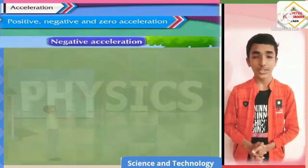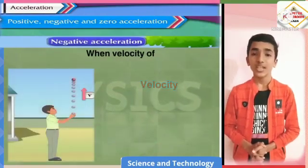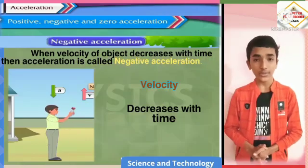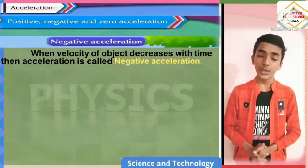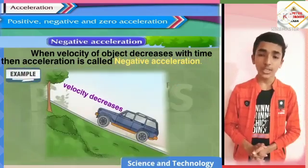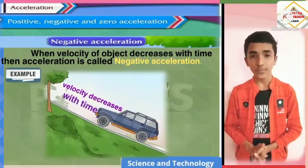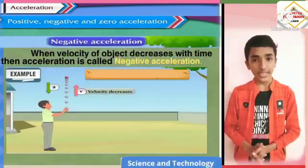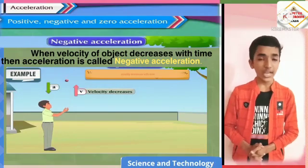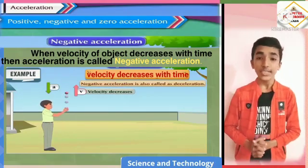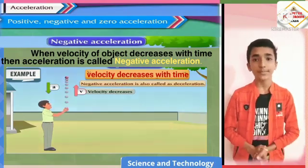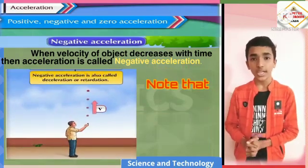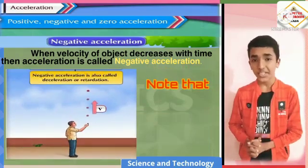Then, negative acceleration: when the velocity of a body decreases with time, then acceleration is called as negative acceleration. For example: first, motion of a vehicle on an ascending path; second, a ball thrown vertically upwards moves with negative acceleration as the velocity decreases with time. Note that negative acceleration is also called as deceleration or retardation.